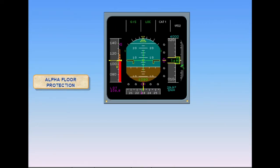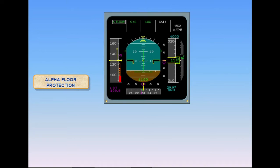The angle of attack threshold which triggers alpha floor is processed by the FACs as a function of aircraft parameters such as configuration, deceleration rate, angle of attack, etc. Much of this information is derived from the IRs. When alpha floor is triggered, the autothrottles are turned on if they were previously off, indicated by a white A/THR on the FMA. A floor in green is displayed as the autothrottle mode. The alpha floor function is available from liftoff down to 100 feet AGL.